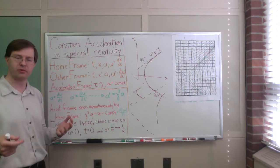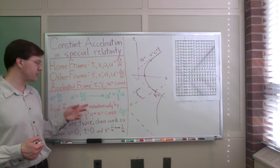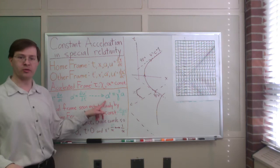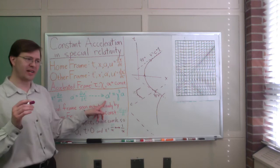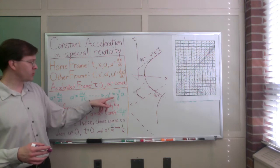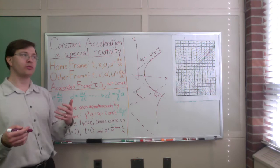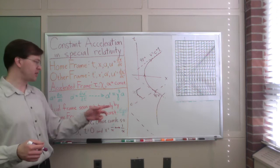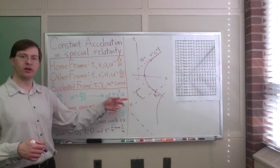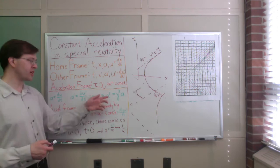If you play around with the velocity transformation equation — u' in terms of u and the relative velocity v between the home and other frames — you will reach this result: a' equals gamma cubed times a, where gamma is the usual relativistic gamma factor for the velocity between the home and other frame — 1 over the square root of 1 minus v squared. So the acceleration measured in the prime frame equals gamma cubed times the acceleration in the home frame.